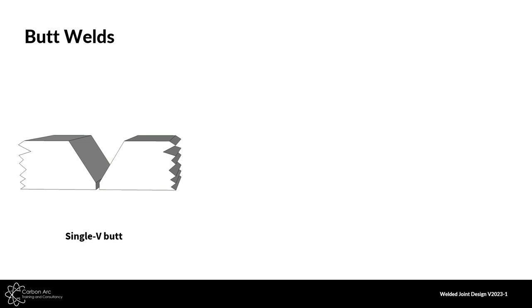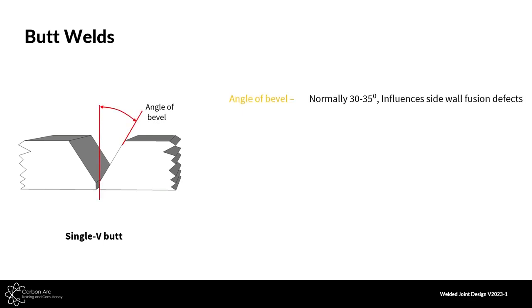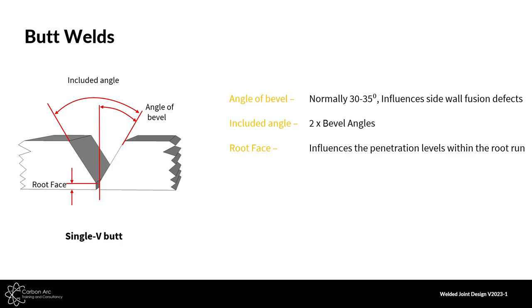Within a single V we have a few different features that we can measure and capture in our control documentation. First is the angle of bevel, normally between 30 to 35 degrees from top dead centre, which influences sidewall fusion defects. The smaller that angle — the more we head towards zero and a straight unprepped edge — the more likely we are to create lack of fusion defects. Because we have two sides of the joint in a single V, we can also account for an included angle, which is two times the bevel angle. So if we are running a 30 degree bevel angle, our included angle will be 60 degrees. Our root face, also referred to as a nose or tip, influences the amount of penetration we will get within the root run.